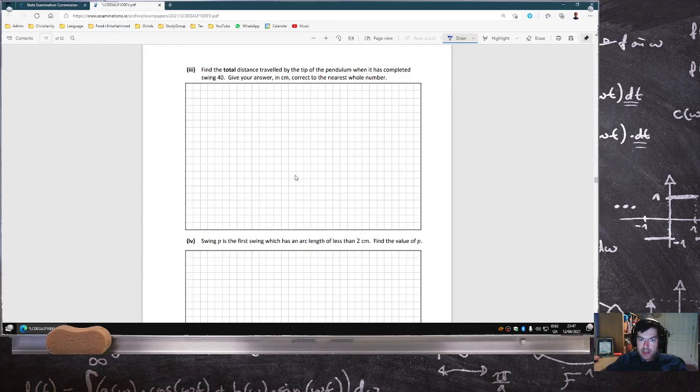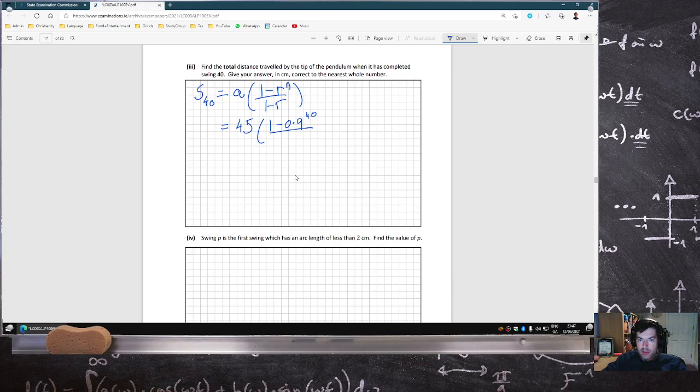Find the total distance traveled by the tip of the pendulum when it's completed swing 40. So that's S40, which is A times 1 minus R power N over 1 minus R: 45 centimeters, 1 minus 0.9 power 40 over 1 minus 0.9. And that's 443 centimeters.